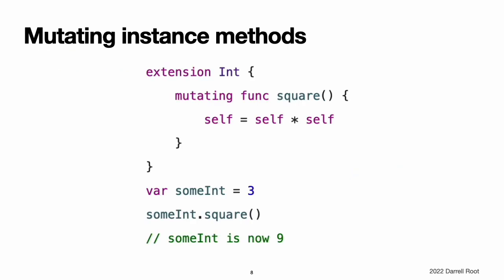Mutating instance methods. Instance methods added with an extension can also modify or mutate the instance itself. Structure and enumeration methods that modify self or its properties must mark the instance method as mutating, just like mutating methods from an original implementation. This example adds a new mutating method called square to Swift's integer type, which squares the original value.